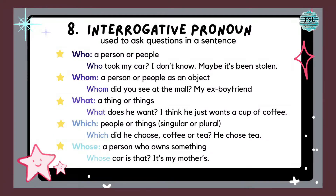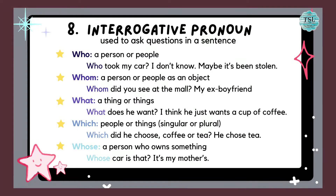Next is interrogative pronoun. This pronoun is used to ask questions in a sentence. The main interrogative pronouns are: who, which refers to a person or people; whom, which refers to a person or people as an object; what, which refers to a thing or things; which, refers to people or things and is used to let the listeners choose between one or two; and whose, which refers to a person who owns something. For example: who took my car? I don't know, maybe it's been stolen. Whom did you see at the mall? My ex-boyfriend. We use whom because you want to know who your listener saw at the mall — it is an object. What does he want? I think he just wants a cup of coffee.